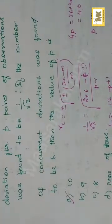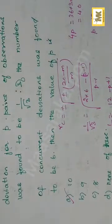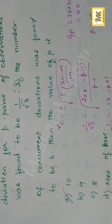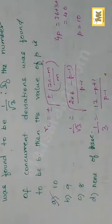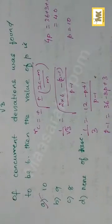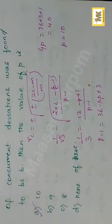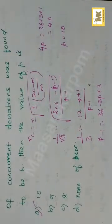Substitute rc = 1 by root 3. We have 2 into 6 minus m, where m is p minus 1, divided by p minus 1. We need to find p pairs. So m is p minus 1, divided by p minus 1. Simplify and cross multiply to solve for p.